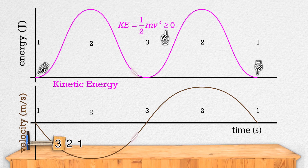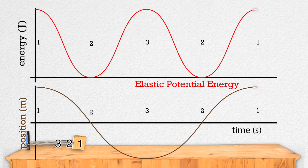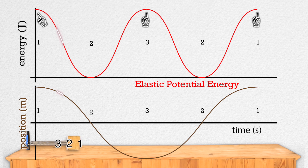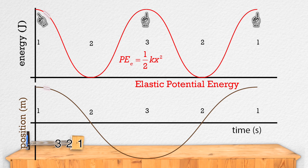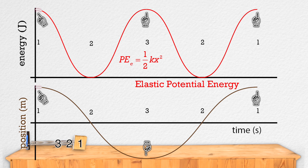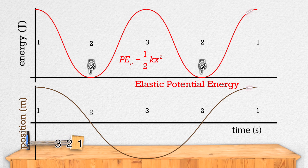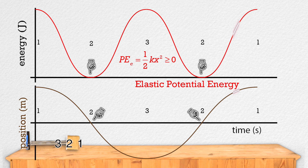Thank you Billy, that is all correct. Now let's look at the elastic potential energy of the frictionless horizontal mass spring system as a function of time. Bo, tell me what you see when you look at the elastic potential energy graph. At positions 1 and 3, elastic potential energy has its maximum value. That makes sense because the equation for elastic potential energy is one-half the spring constant times the displacement from equilibrium position squared. At positions 1 and 3, the maximum displacement from equilibrium position has its maximum magnitude, which is the amplitude, and therefore the elastic potential energy will be a maximum. At position 2, the elastic potential energy is zero because the displacement from equilibrium position is zero. And the elastic potential energy is always greater than or equal to zero because the displacement from equilibrium position is squared and the spring constant is always positive.